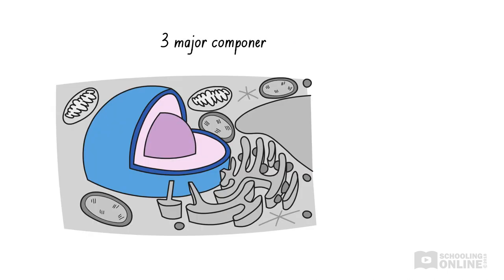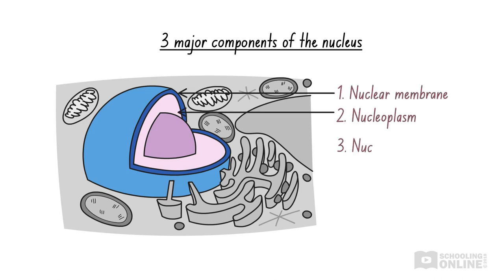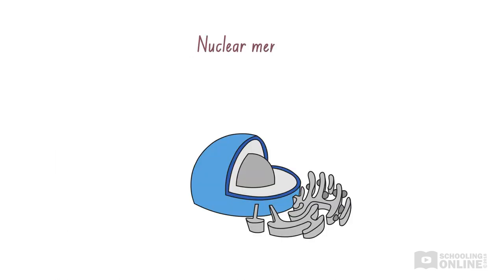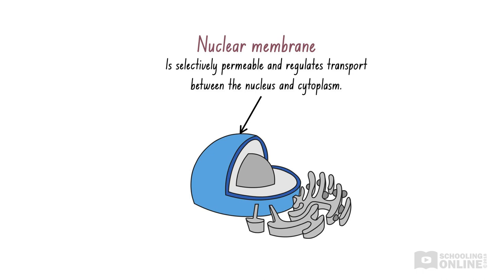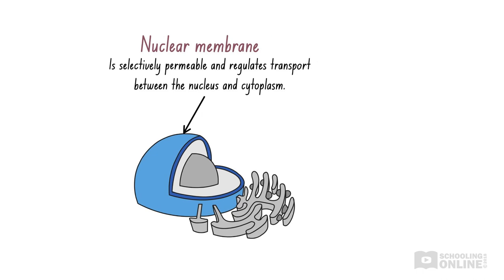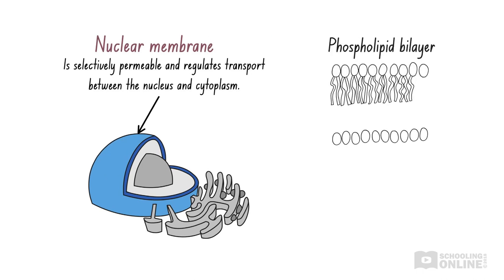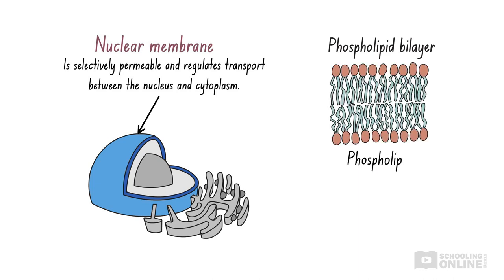There are three major components of the nucleus: the nuclear membrane, nucleoplasm, and nucleolus. The nucleus is surrounded by a porous nuclear membrane, which actually includes an outer and inner membrane. The nuclear membrane is selectively permeable because the pores regulate the transport of substances between the nucleus and the external environment. The outer and inner membranes both consist of a phospholipid bilayer — two layers of phospholipid molecules composed of a phosphate head and a fatty acid tail.